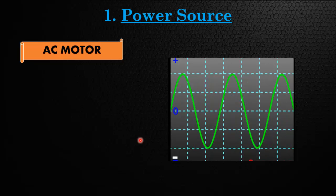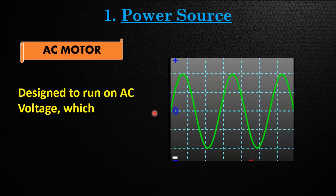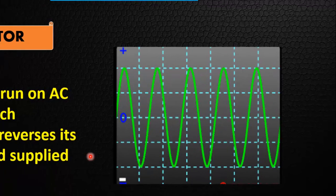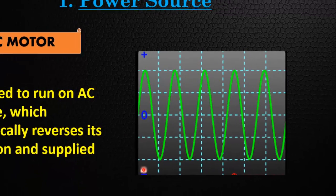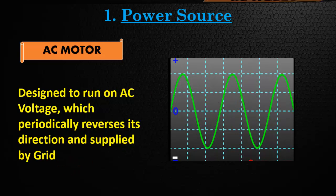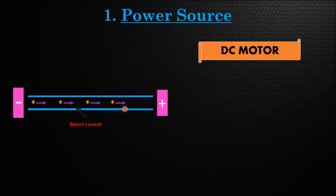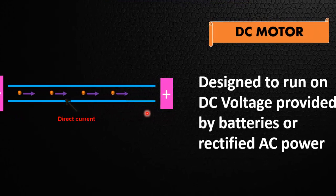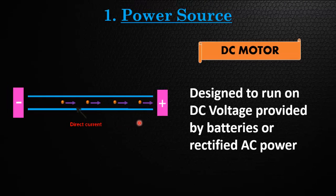The first difference is based on power source. AC motors are designed to run on alternating current, which periodically reverses its direction, creating a rotating magnetic field. The AC power is typically supplied by the electrical grid. DC motors are designed to run on direct current, where electrical flow is constant in one direction. This type of power is provided by batteries or rectified AC power.